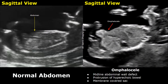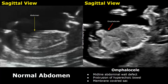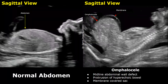A fetus with Edwards syndrome may have abdominal defects as well. The image on the left is of a normal fetal abdomen in sagittal view. An omphalocele is a midline abdominal wall defect that leads to protrusion of abdominal contents such as bowel and even the liver through this defect. Hyperechoic bowel is seen protruding through this defect, forming a sac covered by a membrane. We can also see protrusion of hyperechoic bowel with a visible membrane.